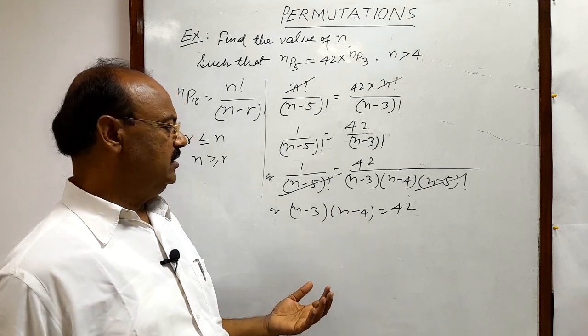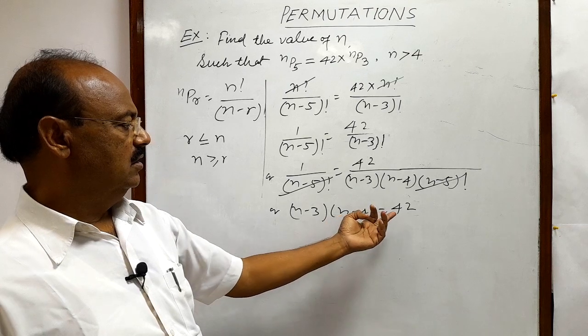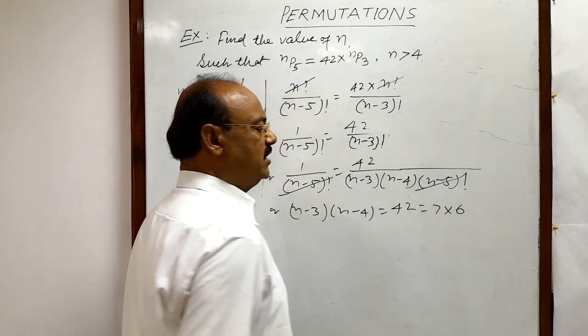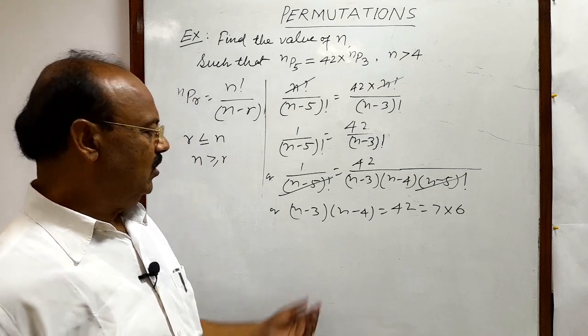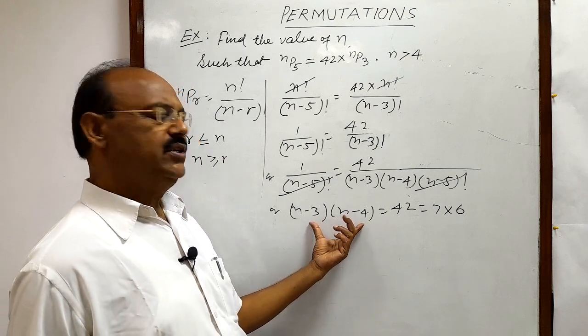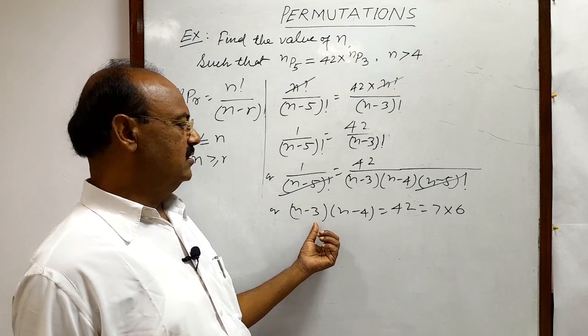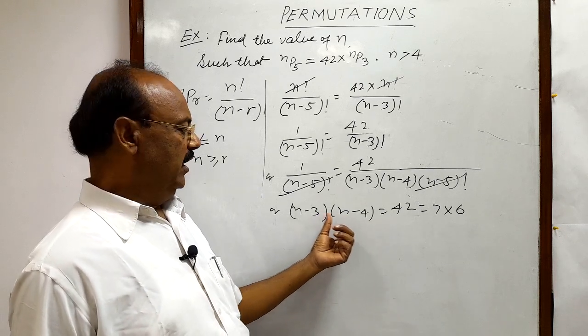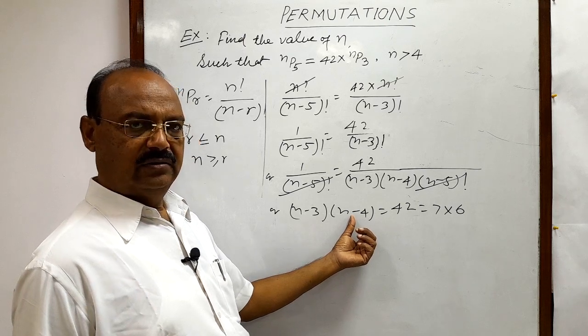Or another method is that this 42 can be written as 7 into 6. Because this is nothing but two consecutive numbers. N minus 3 and N minus 4. Naturally, N minus 3 is a bigger number. N minus 4 is smaller by 1.